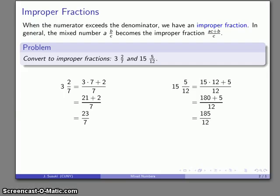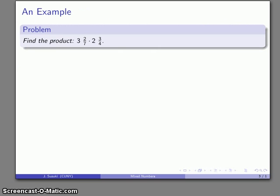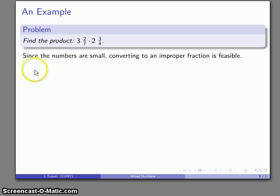Now the reason we would care is that one way we have of multiplying mixed numbers is, since we know how to multiply two fractions, if I convert a mixed number into a fraction, I can do the multiplication that way. So for example, take the product 3 and 2/7 times 2 and 3/4. And here's the observation to make: the numbers are relatively small. 3 times 7 not too bad, plus 2 of course easy.